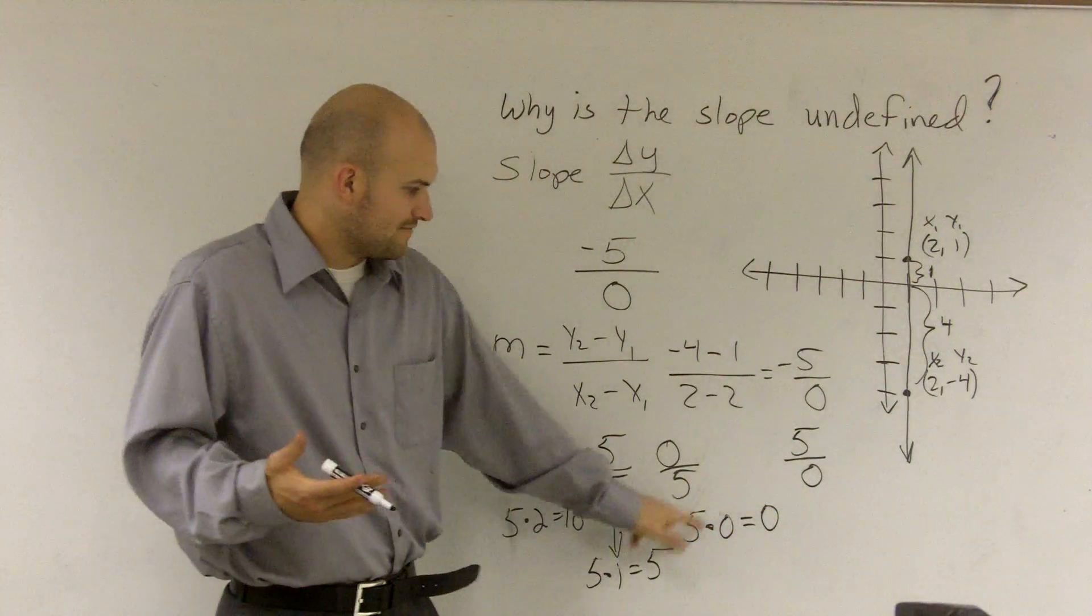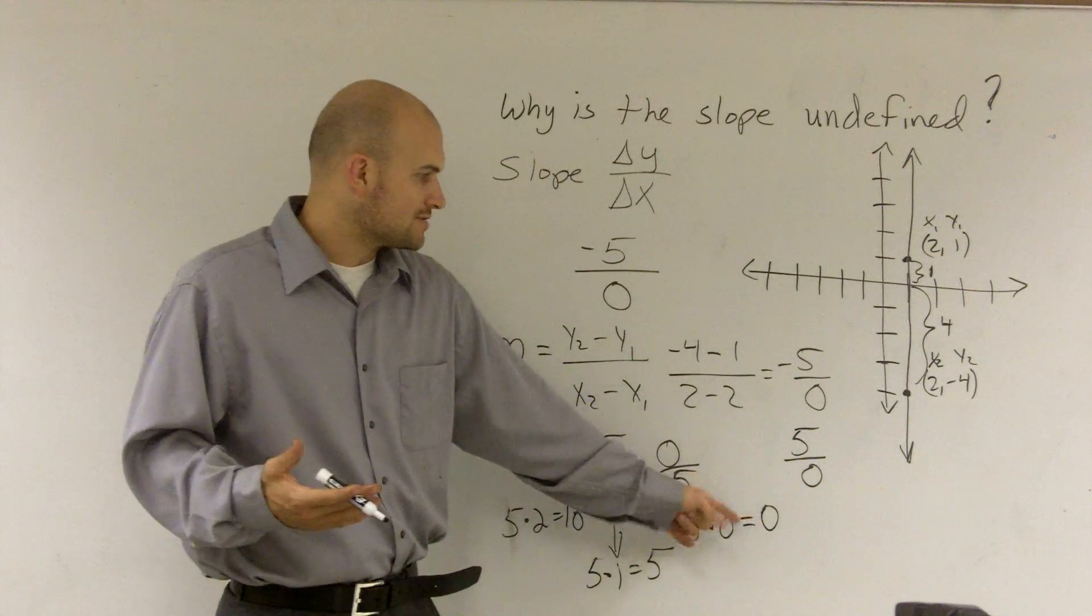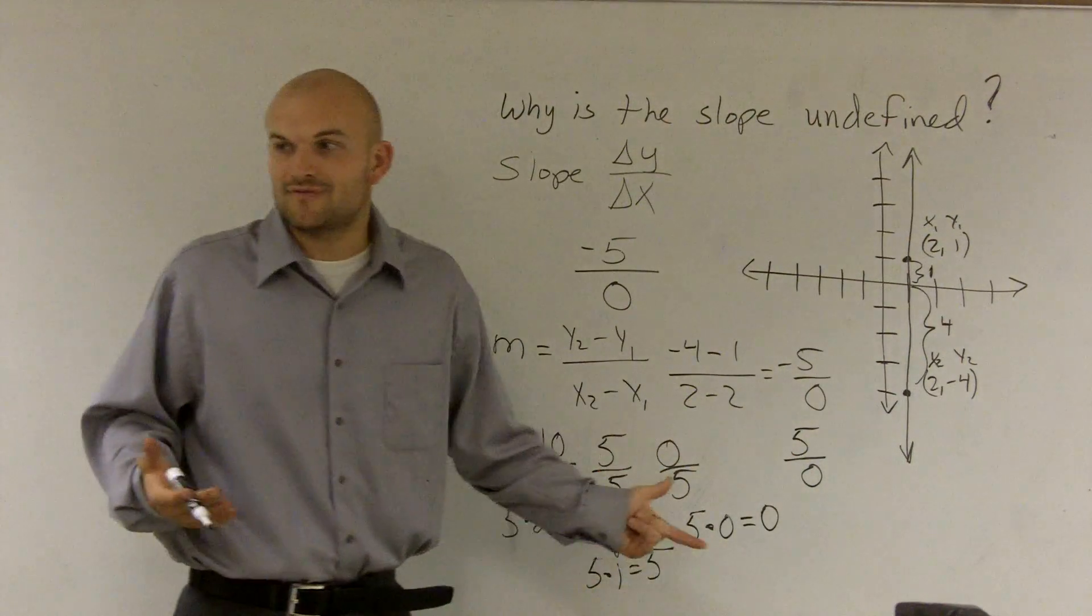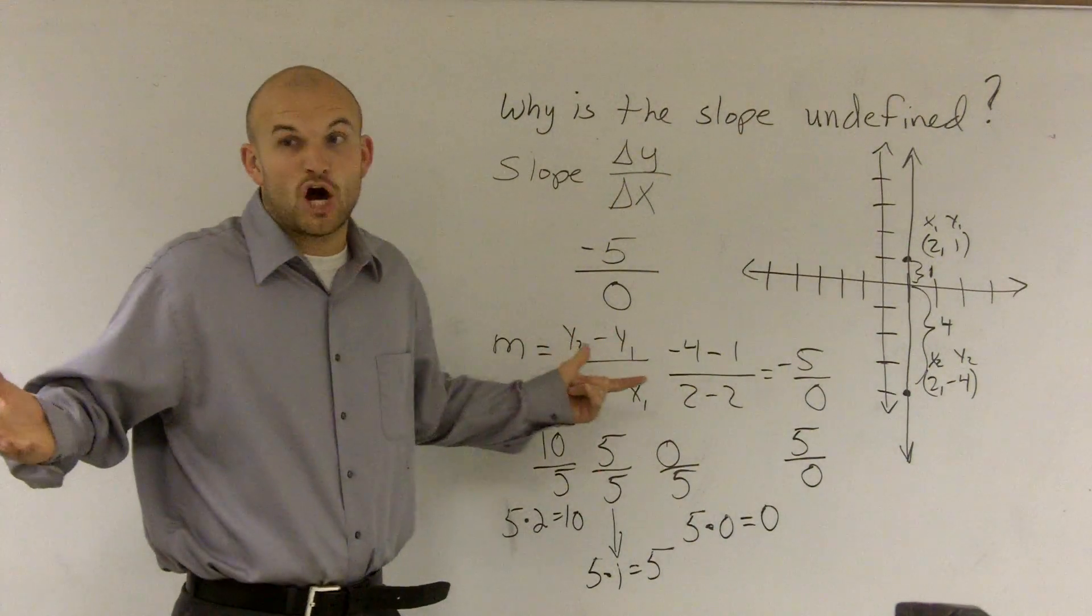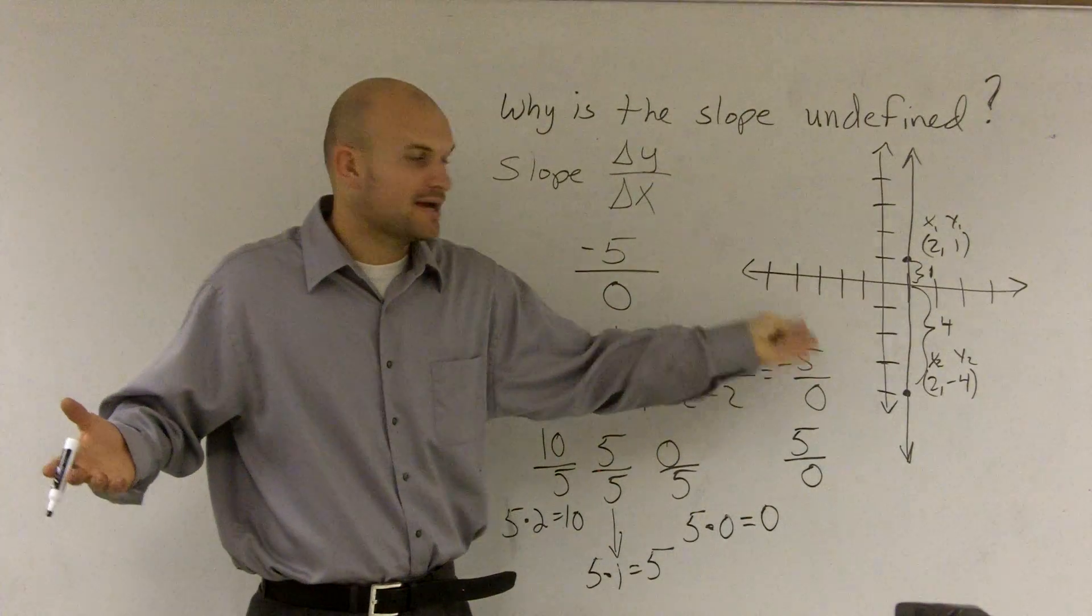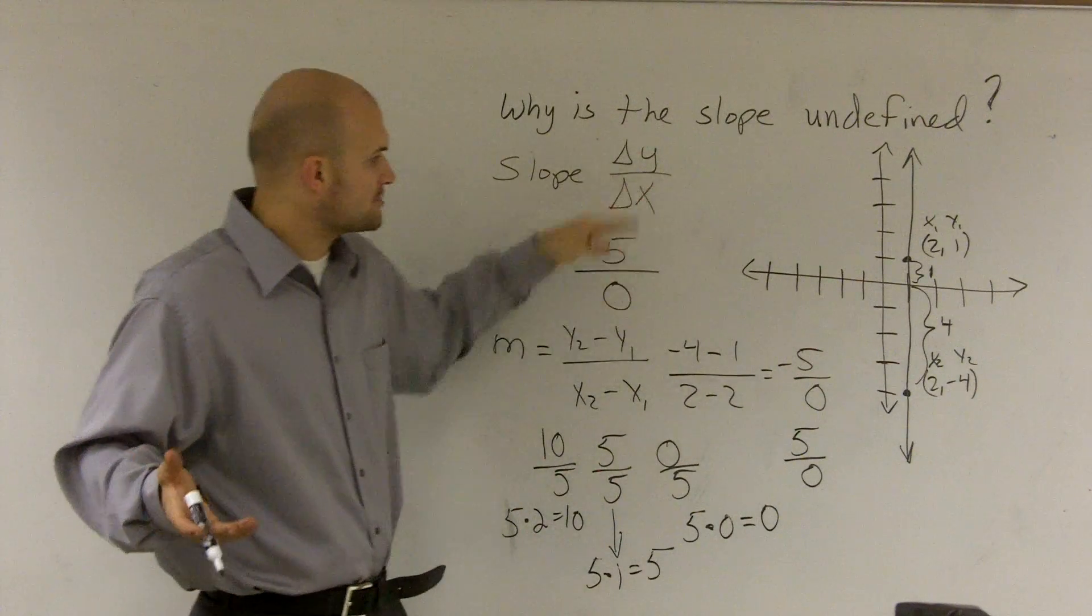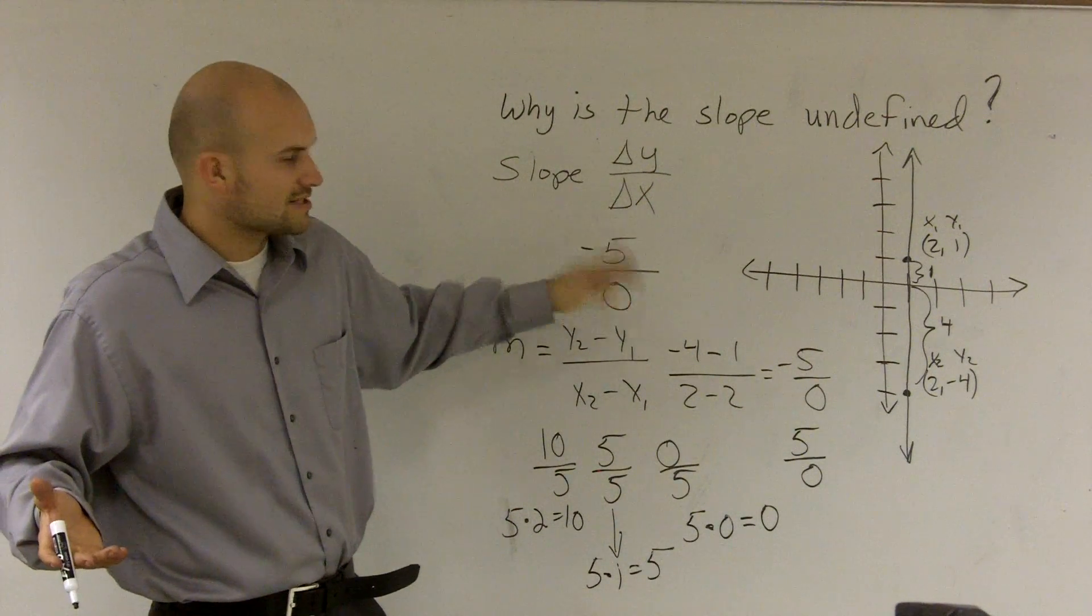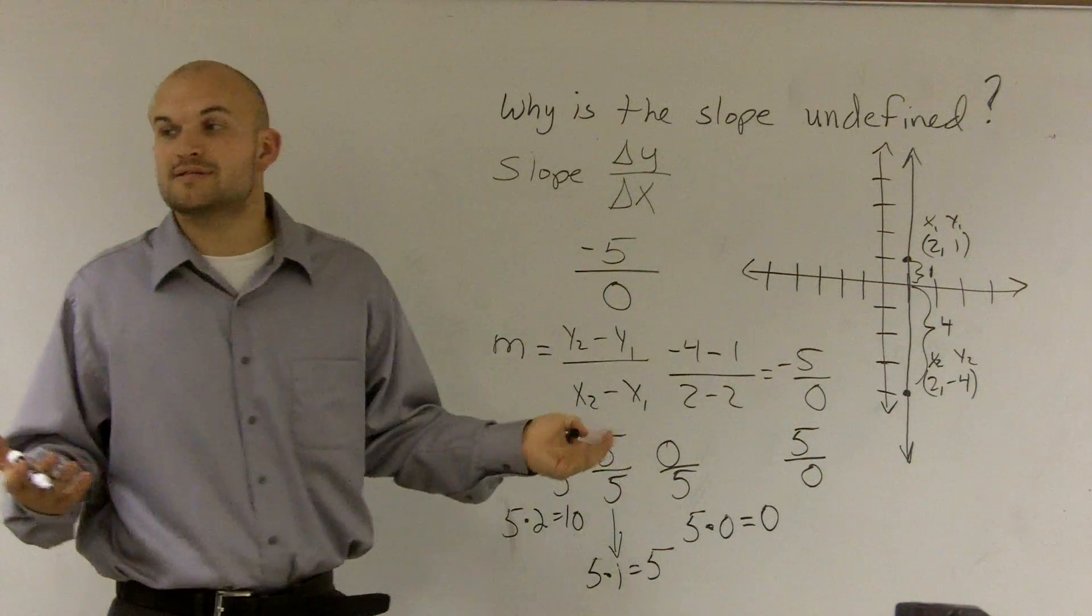So as explained here, 5 times 0 always equals 0. So 0 times what is going to equal 5? Undefined, right? So that's why our slope is undefined, OK? I didn't change my x values at all, so I'm trying to divide by 0 because it's unchanged. Well, we can't divide by 0, and that's why.